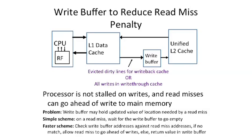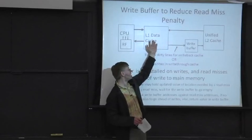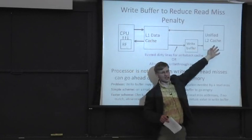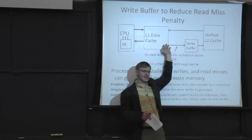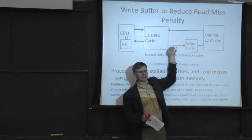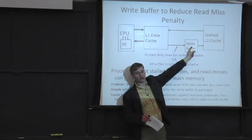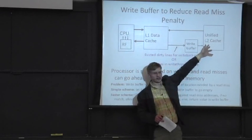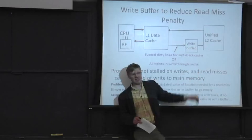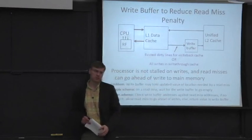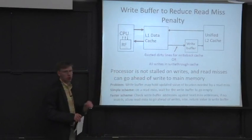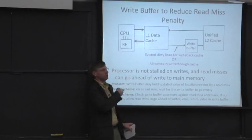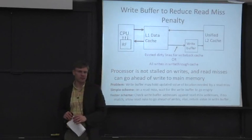Now we have somewhere to put the data. If we want to do this fast, we do the load, miss in our L1 cache, send that request out, and instantaneously start evicting the line into this buffer. The reason we can't evict it directly is because the load is using the L2 cache. But we have a place to put the victim data, and when the load data comes back, we put it into the L1 data array.